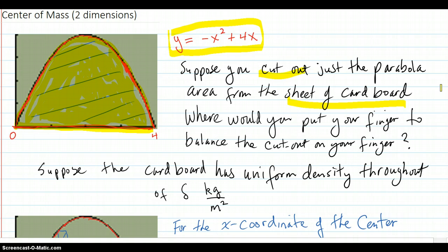Now that object has uniform density. Because it's just a piece of cardboard. And that density is just delta kilograms per meter squared. So the question is, where would you put the balance point in here, so that it will balance on your finger from beneath.